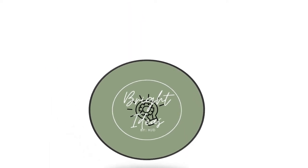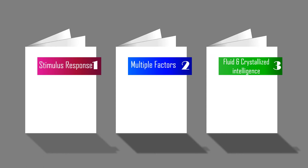Hi, this is Jay. Welcome to Bright Ideas. Here are the three theories and definitions of intelligence: Thorndike's Stimulus Response Theory, Thurstone's Multiple Factors Theory of Intelligence, and Cattell's Theory on Fluid and Crystallized Intelligence.